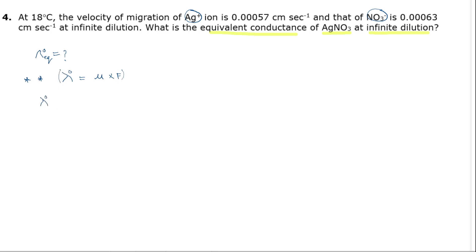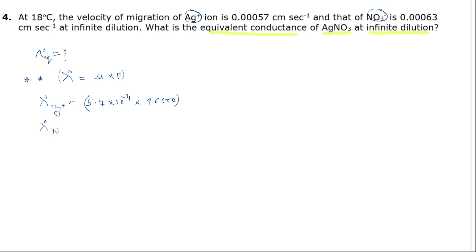If I want to find the equivalent conductance of silver plus ion, I have to simply multiply its velocity of migration — that is 5.7 into 10 raise to the power minus 4 — into Faraday, 96500. Similarly, I can find the equivalent conductance of nitrate ion.